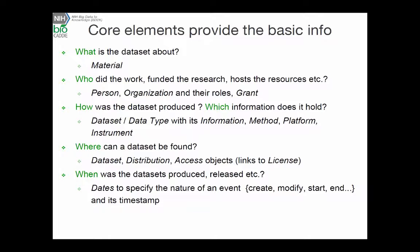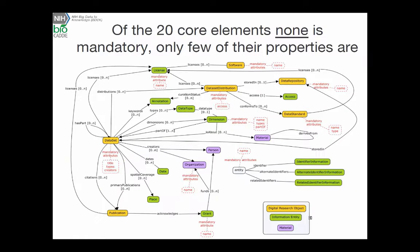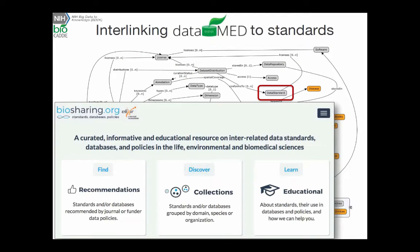The data type indicates if it is part of the dataset. A dataset may have many dimensions, and a dimension may belong to different datasets. We indicate the unit, which again can be annotated like in CDEs. We can also indicate what the dimension is about, and we can connect the dimension with a particular material — for example, the dimension is BMI and it is about a patient.